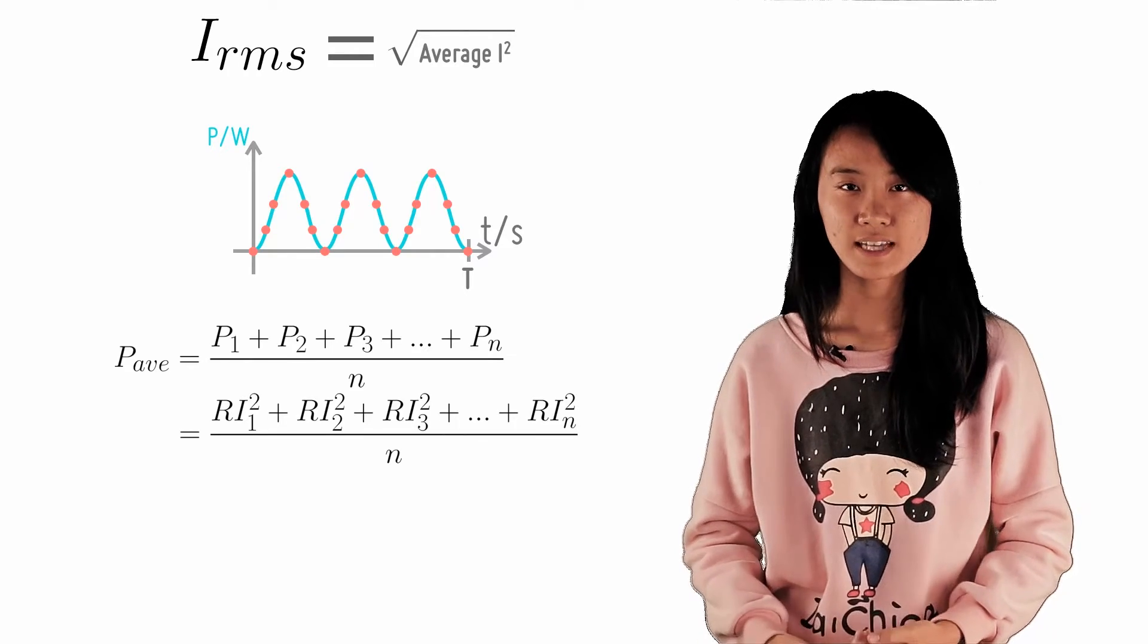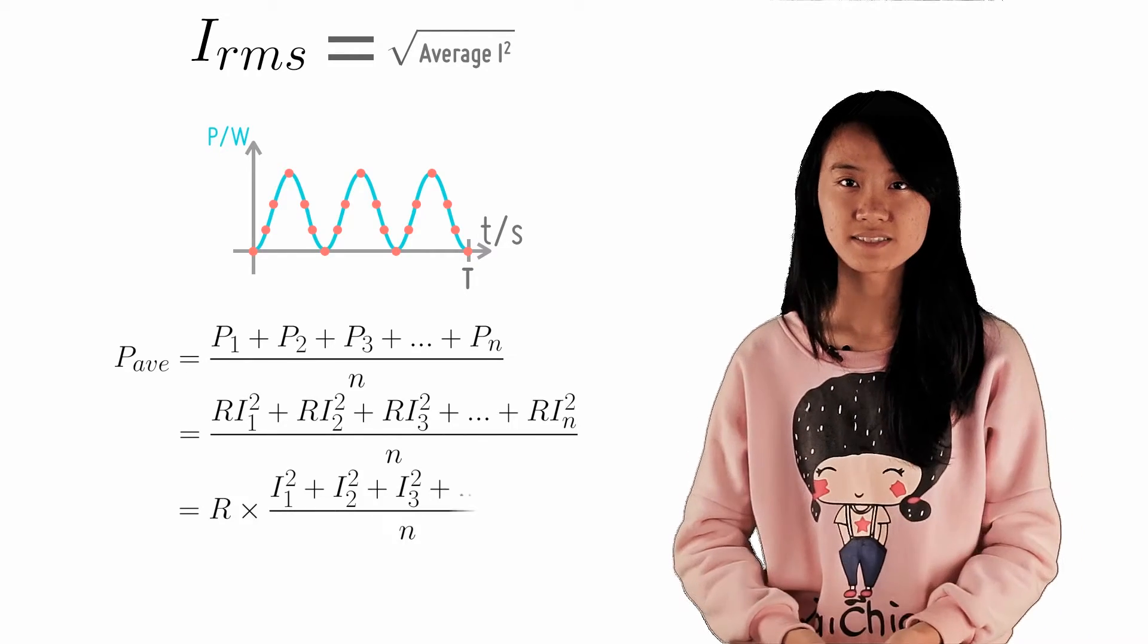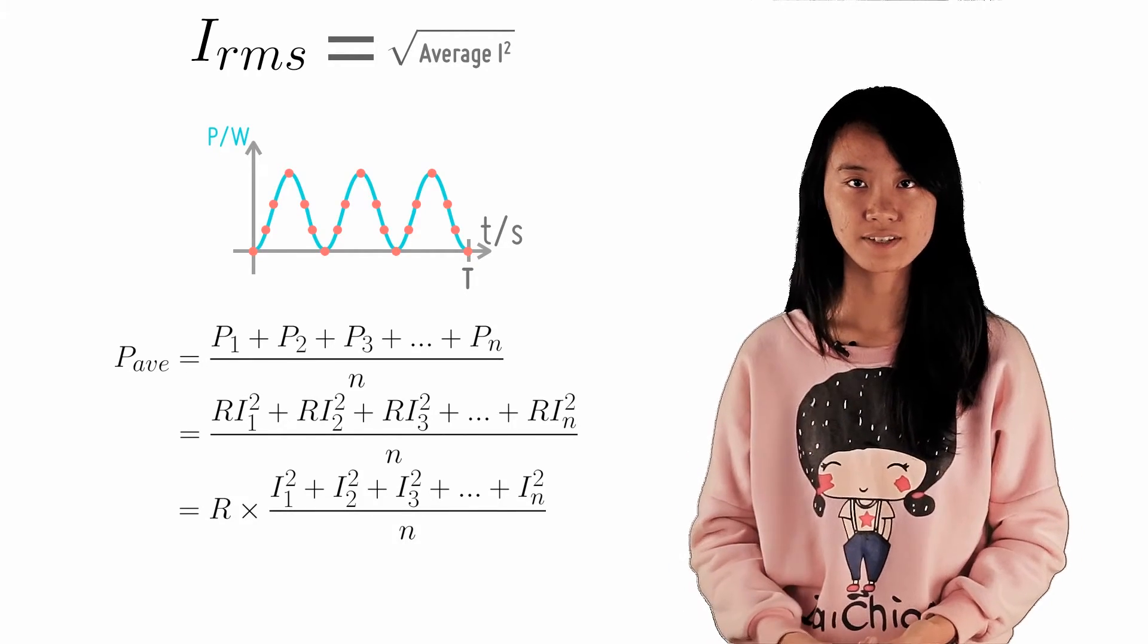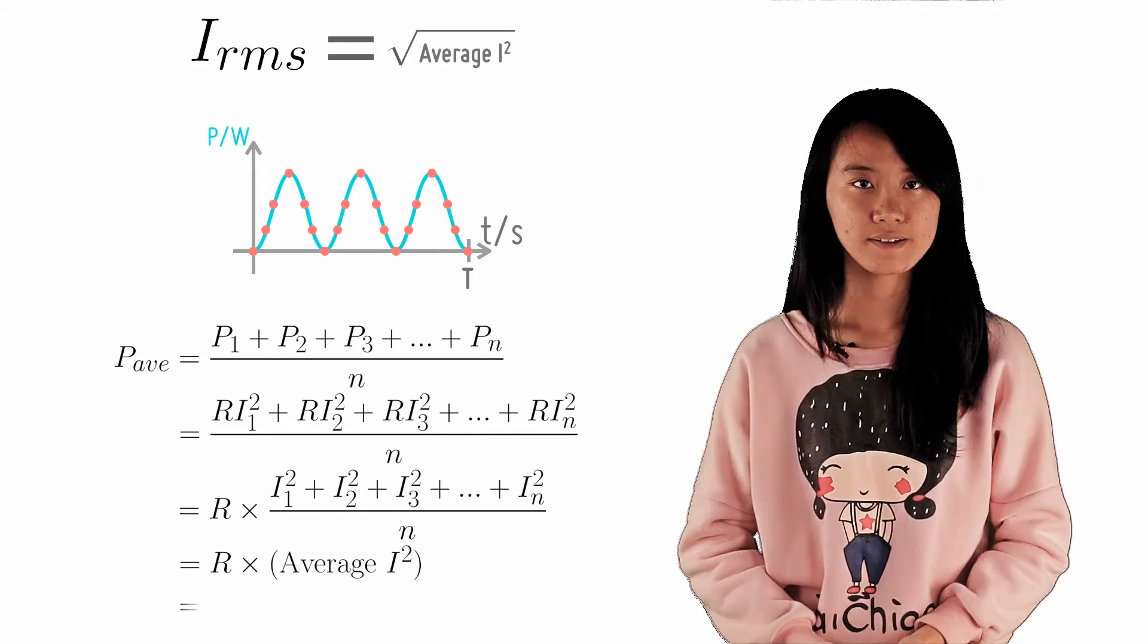By the distributive law, we can bring R out since it is a constant, and hence we obtain the definition of the average power using I_RMS.